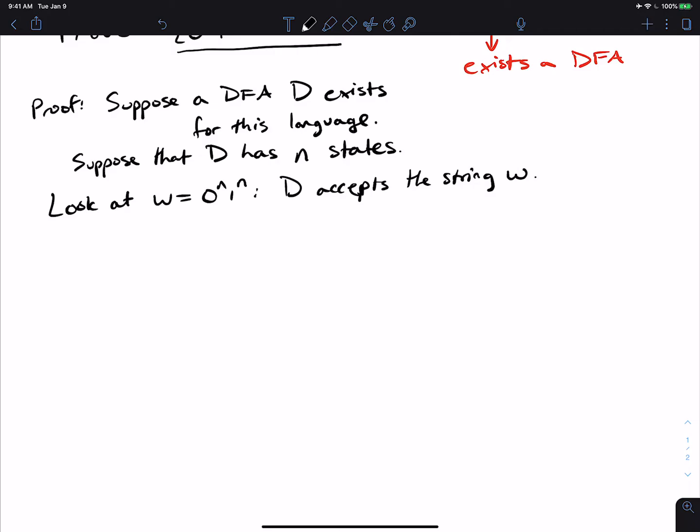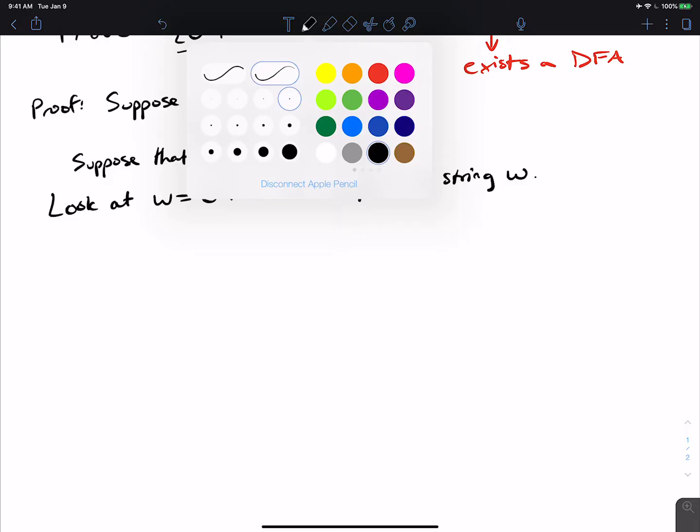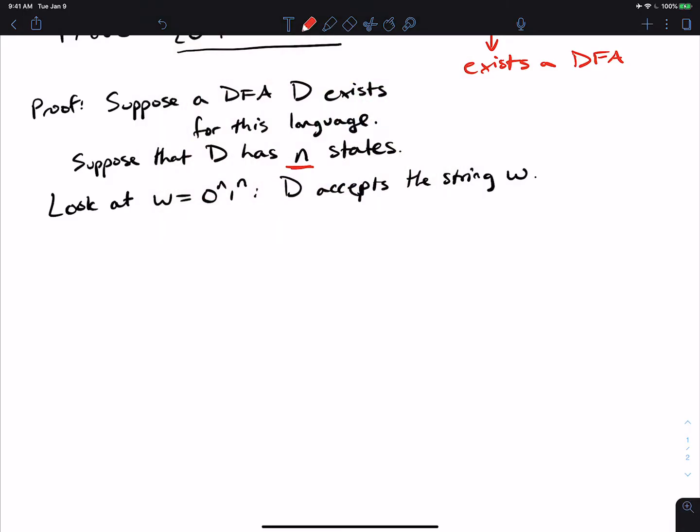But what does that tell us here? Well, look at the number of states we have. Let's look at the prefix of the string, which is all zeros, and it has n zeros.